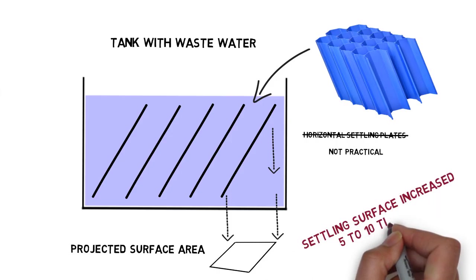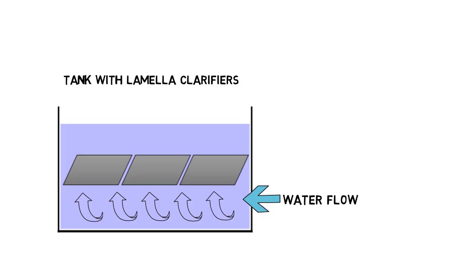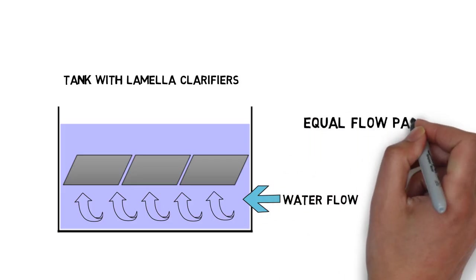Lamellar clarifiers increase the settling area by 5 to 10 times. Also advantageous is that incoming water will be slowed down and redirected to flow between lamellar plates which improves the flow pattern.